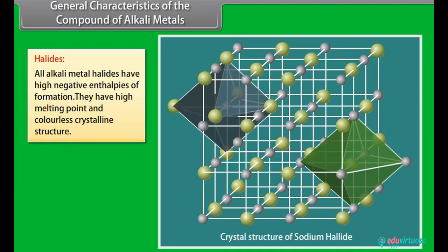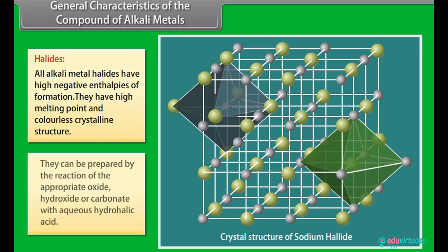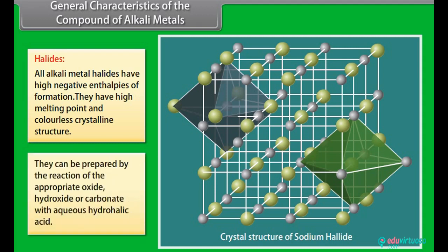Halides: all alkali metal halides have high negative enthalpy of formation. They have high melting points and colorless crystalline structures. They can be prepared by the reaction of the appropriate oxide, hydroxide, or carbonate with aqueous hydrohalic acid.